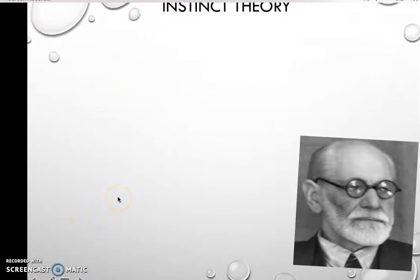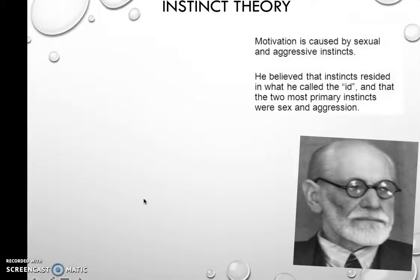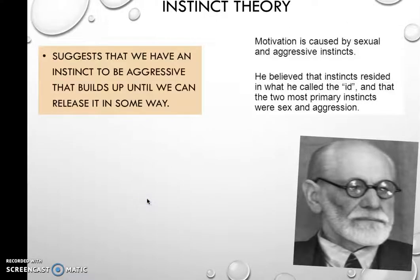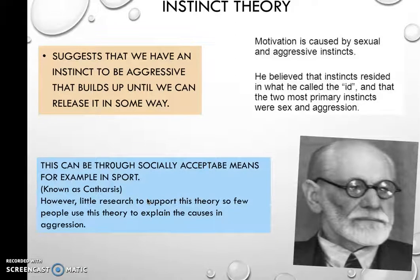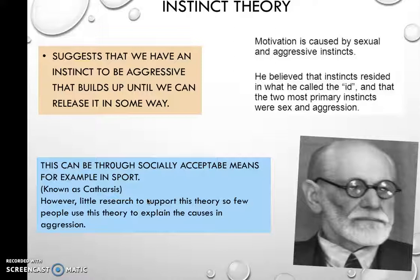First is the instinct theory, which suggests that the motivation we have is either sexually or aggressively orientated — quite primitive. It suggests we always have this instinct to be aggressive, and it builds up until we can release it in some way. One way to potentially release aggression within sport is known as catharsis. However, there is very little research to support this theory, so people don't tend to use it, but we need to recognise it.